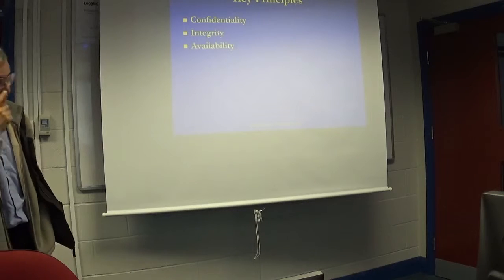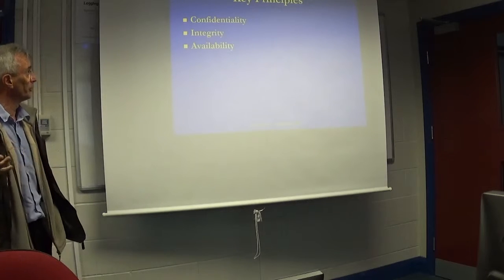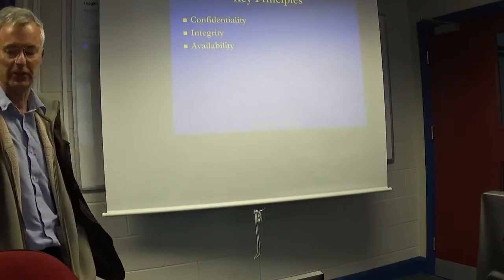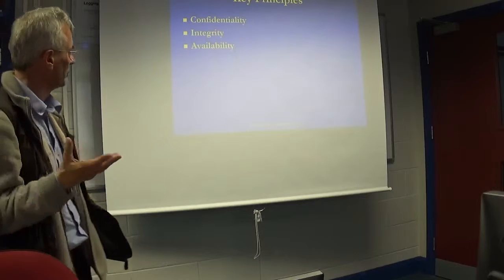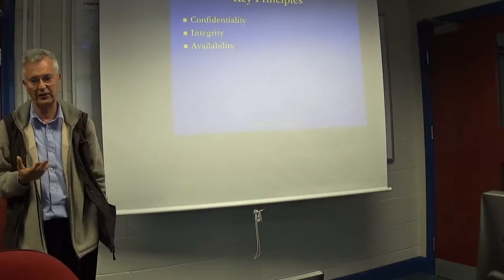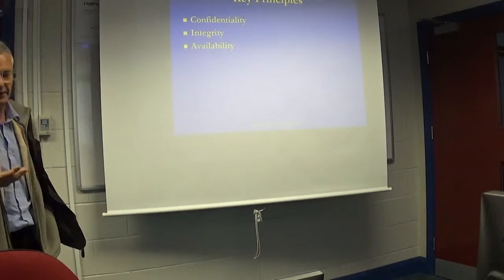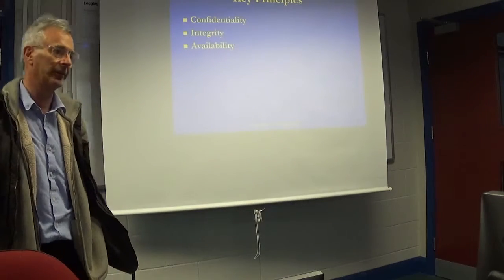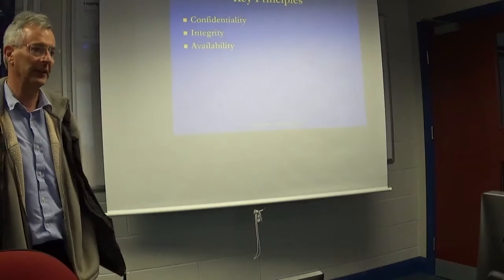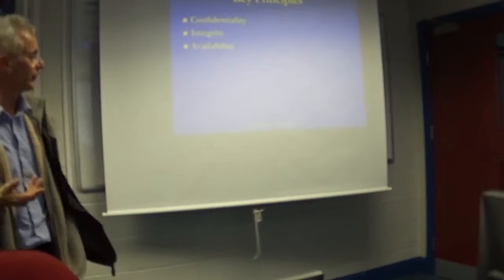Now, before we get started, we have the CIA principles: confidentiality, integrity, and availability. Keeping the data private which is meant to be kept private, making sure that the data you have got is internally consistent, effectively that's what the integrity means, and then availability means data is available to whoever needs to use it at the time that they need to use it within organisational constraints.